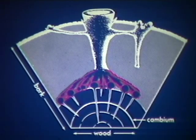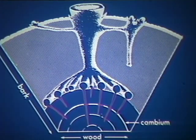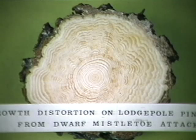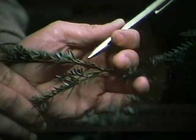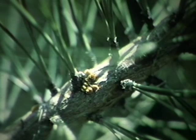Now the dwarf mistletoe really begins its destruction. The cortical strands grow up and down the twig. The sinkers drive down into the cambium, and as the tree grows, the sinkers are embedded by successive layers of wood rings. This slide shows an infection of a 40-year-old lodgepole pine. As the number and size of the host cells multiply, swelling begins. This is the first sign of infection, although the most visible indications are the aerial shoots, which do not usually emerge until the second or third year.